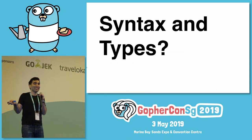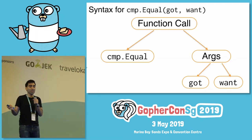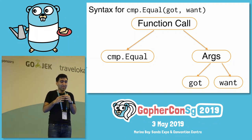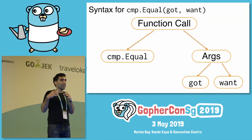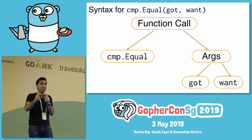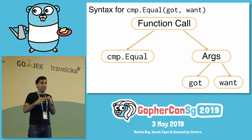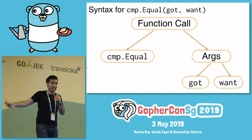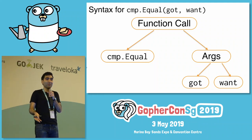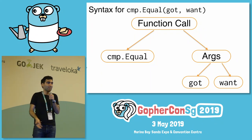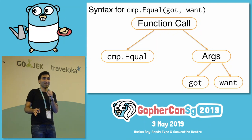So what are syntax and types? Here's a quick overview. 'cmp.Equal(got, want)' is just text, and to manipulate it more easily we turn it into a data structure called the syntax or abstract syntax tree. Each bubble corresponds to some value in Go. The function call struct corresponds to the whole thing cmp.Equal(got, want). It has two fields: the function itself, which is cmp.Equal, and the arguments — two identifiers, got and want. It's really easy to look at the structure and find what we want without having to parse the code ourselves.